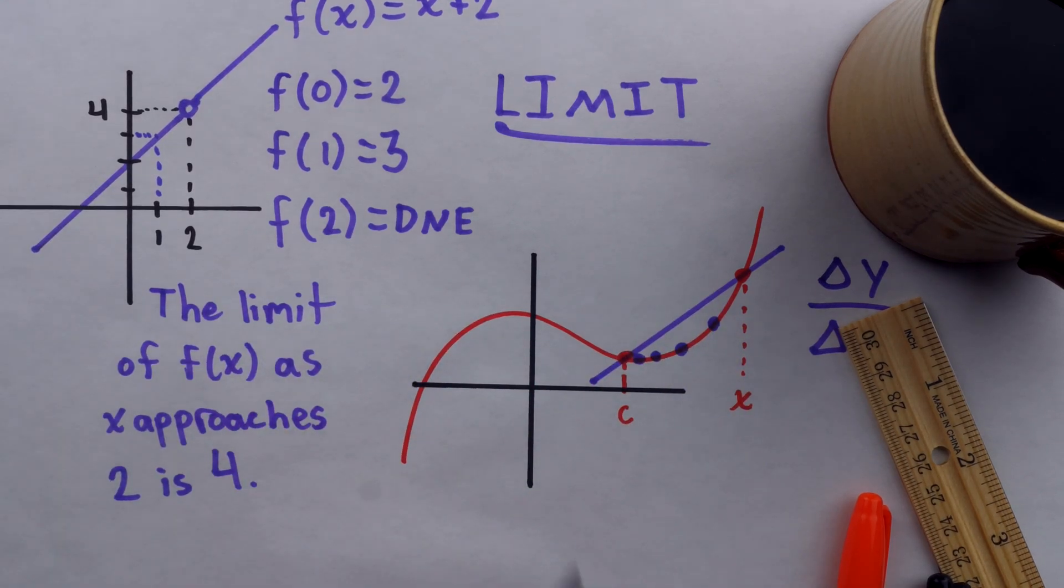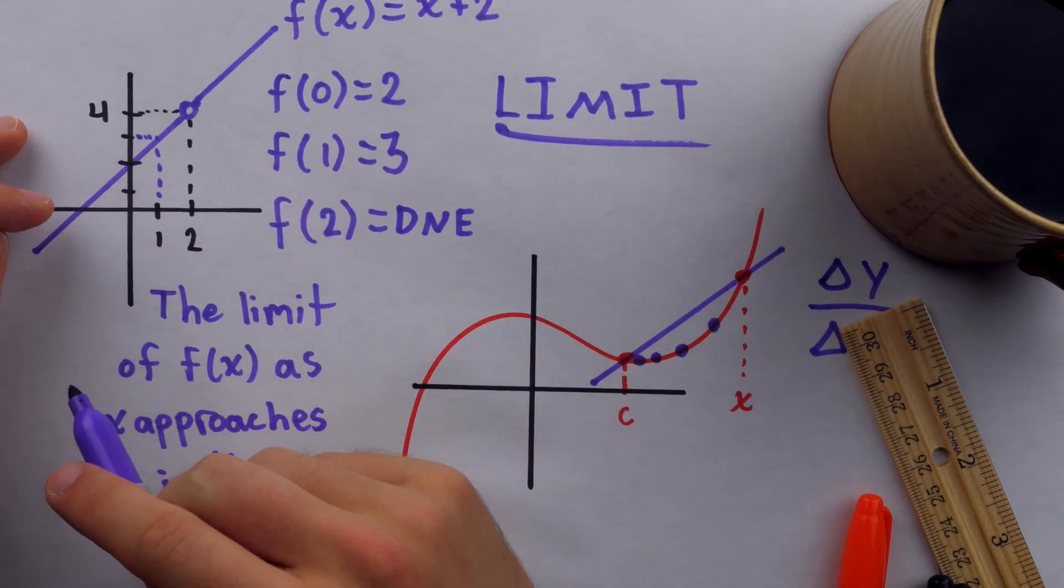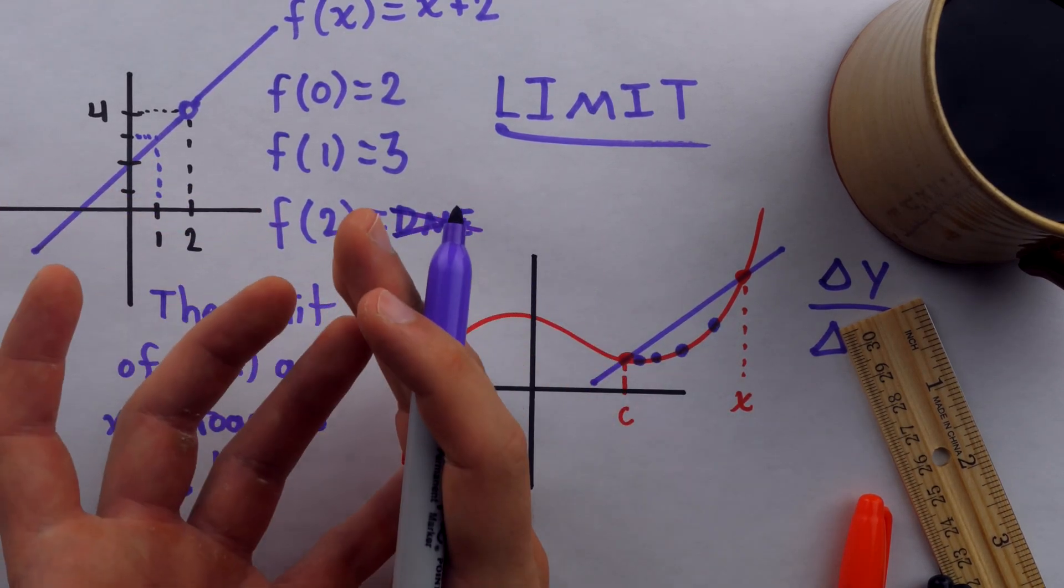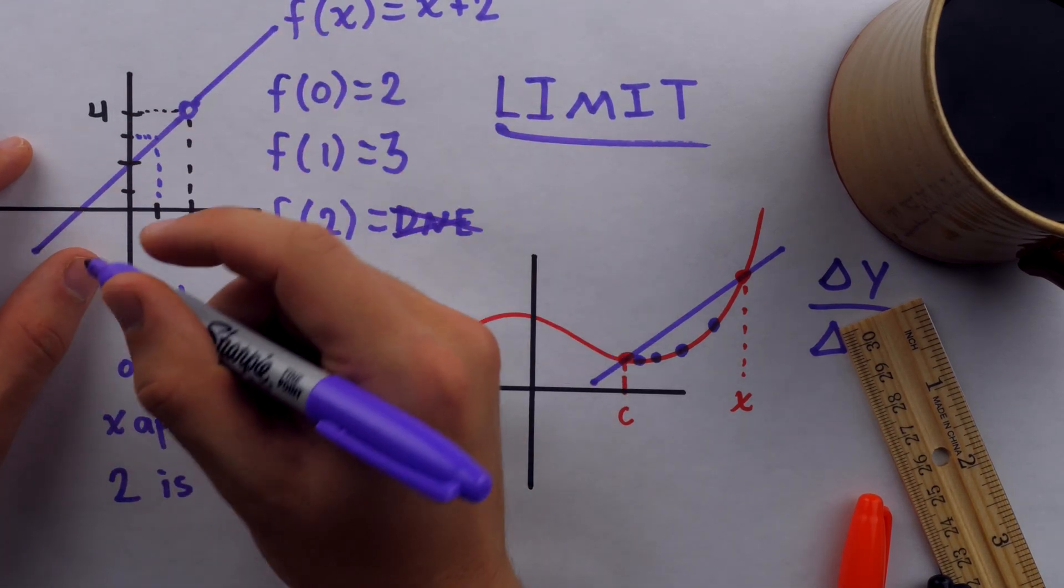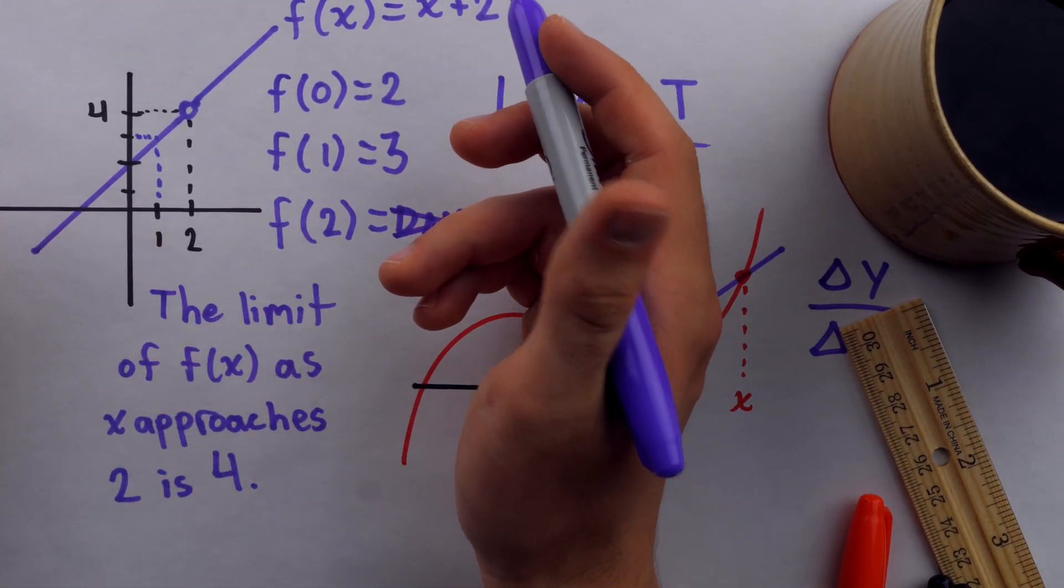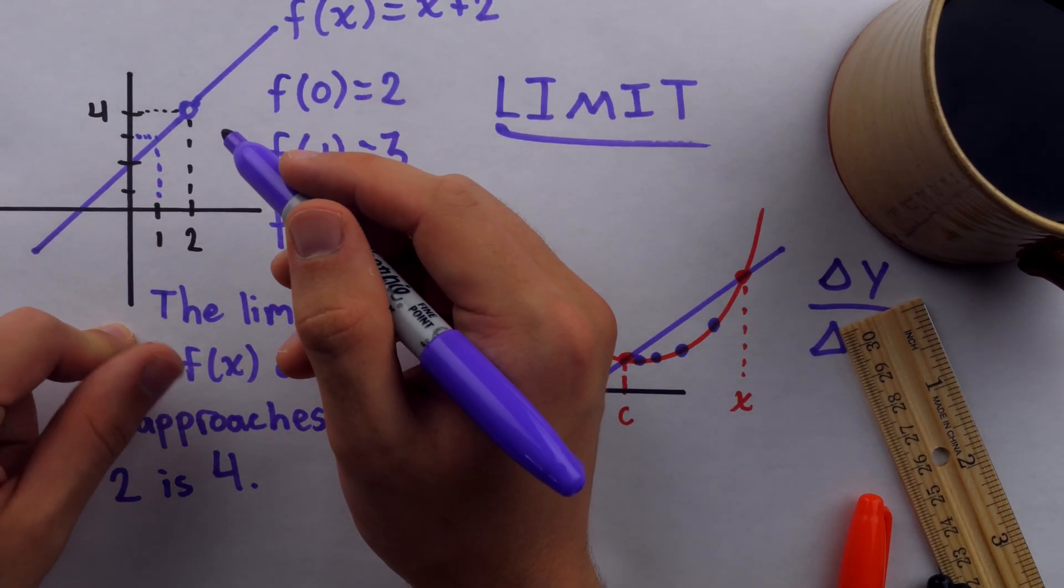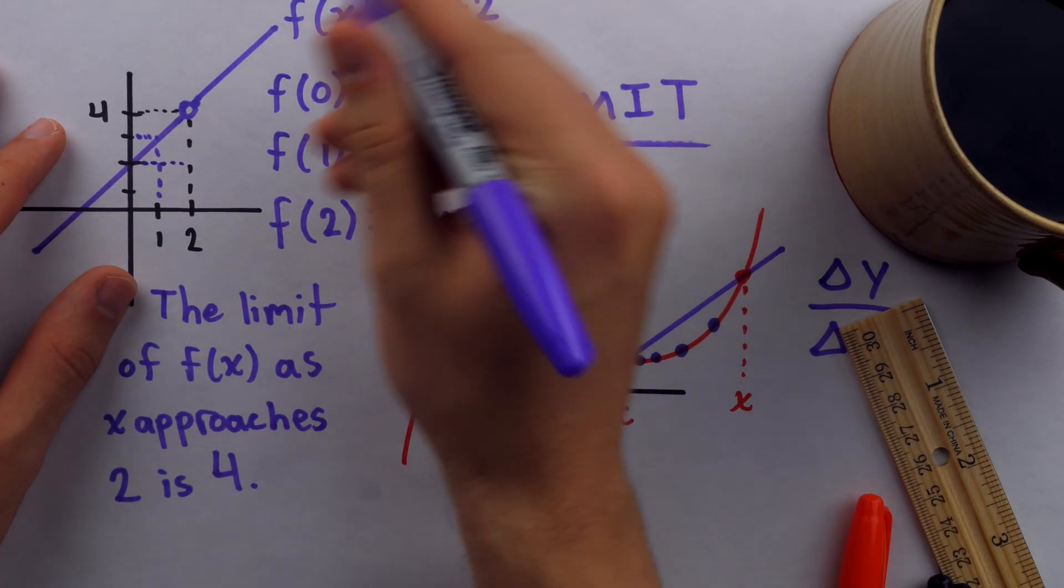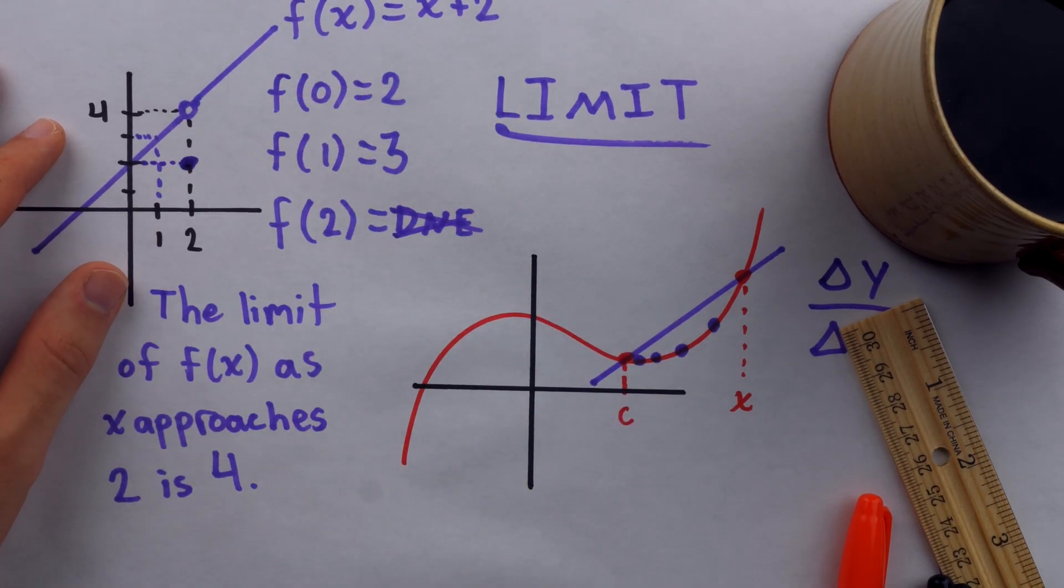To perhaps drive this point home further, we could actually give the function a value at x equals 2, and still have this similar situation. So let's say we just cross out that DNE, let's actually give the function a value at x equals 2. Now if we went ahead and filled in this hole, filled in this empty circle, it would look just like the nice line x plus 2 that we would expect it to. But we don't have to do that. If I want to assign the function a value at x equals 2, it's my right to put that wherever I like. I can do that. So perhaps, at x equals 2, I'll say that my function, my very special function I'm making just for you, it takes on a value of y equals 2.